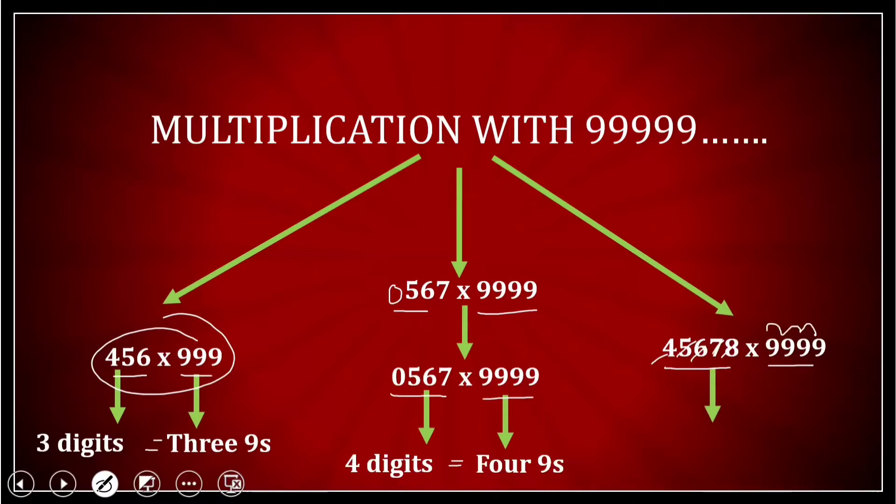So the number of digits is 5 and the number of 9s is 4. That means this is greater than this. If the number of digits was equal to or if it was less than the number, well, we had done these two cases.